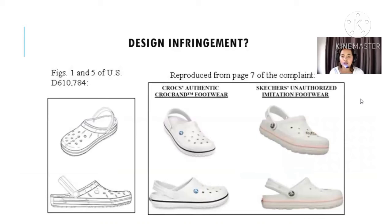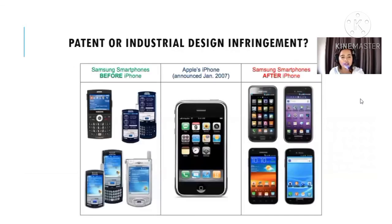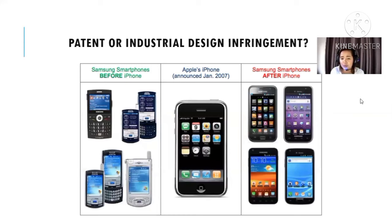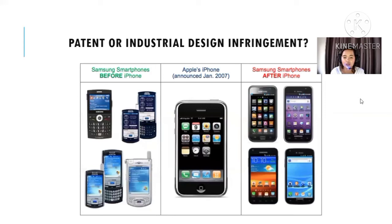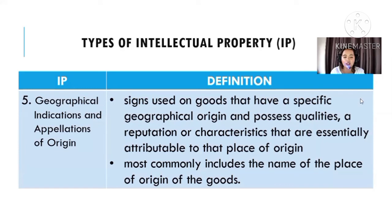An example of design infringement is the case between Crocs and Sketchers, where Sketchers imitated Crocs' design — they ended up in a legal case over design infringement. Another example is Samsung's smartphones imitating Apple's iPhone design. Chinese-made iPhone lookalikes generally haven't been sued by Apple because while the appearance may be copied, Apple's iOS operating system is difficult to replicate. However, if a competing product had a revenue comparable to Apple's, Apple would definitely file a case — that would be patent or industrial design infringement.